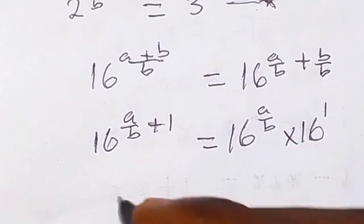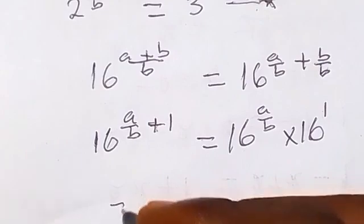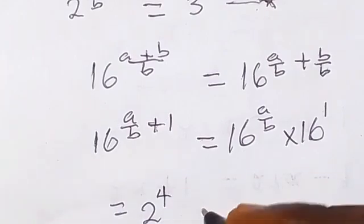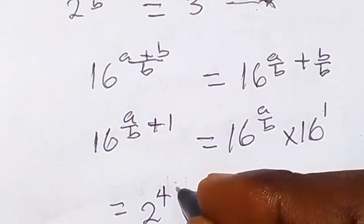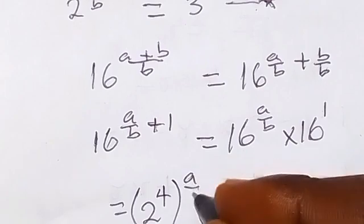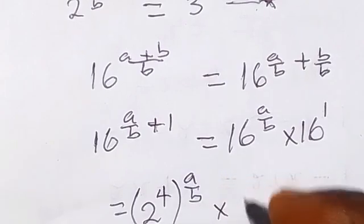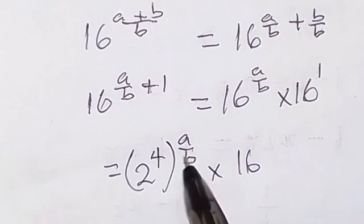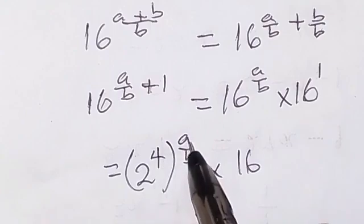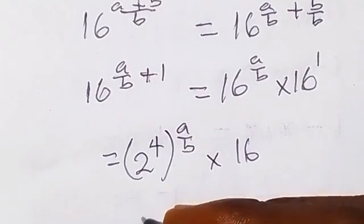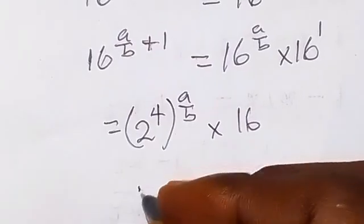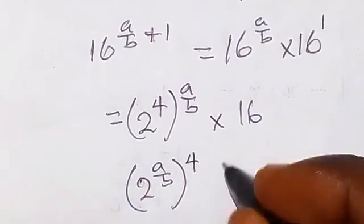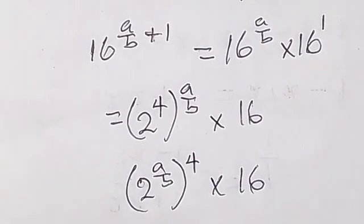Then therefore, we have 16 can be expressed as 2 raised to power 4. We have 2 raised to power 4, that's 2 times 2 times 2 times 2, which gives us 16, then raised to power a over b, then times 16. And also we can rewrite this—a over b can come in and 4 come out. We now have 2 raised to power (a over b), then raised to power 4, still the same thing there, times 16.